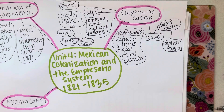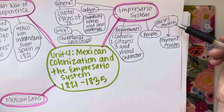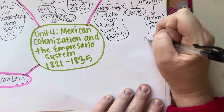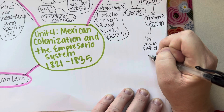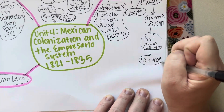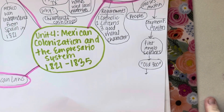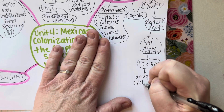So Moses Austin comes to Texas first, then he leaves, then he dies. Mexico wins independence from Spain. Stephen F. Austin comes to Texas and he brings the first Anglo settlers to Texas. This group is called the Old 300. Descendants of the Old 300 are still around and still celebrate the fact that they were part of that first group. Unfortunately, we know that the Old 300 was the first of many Anglo groups that brought enslaved people to Texas.